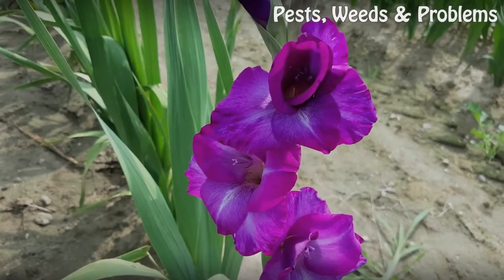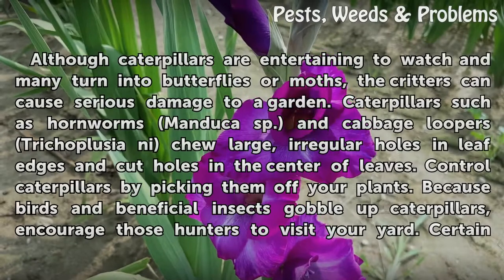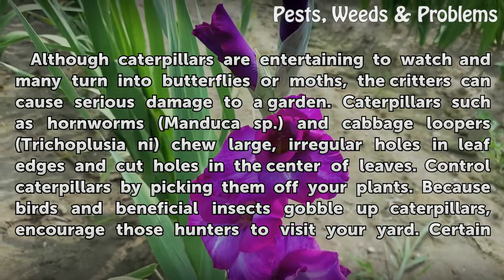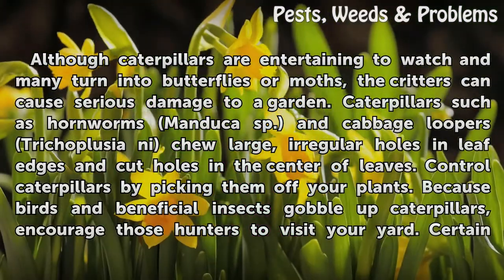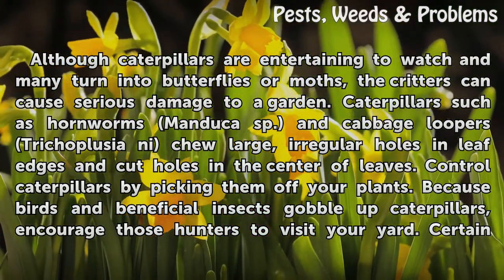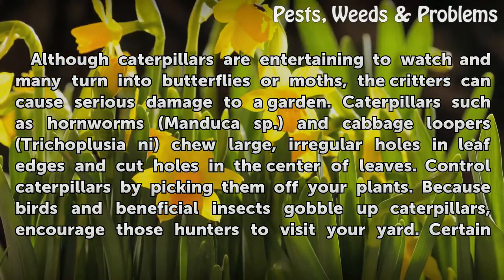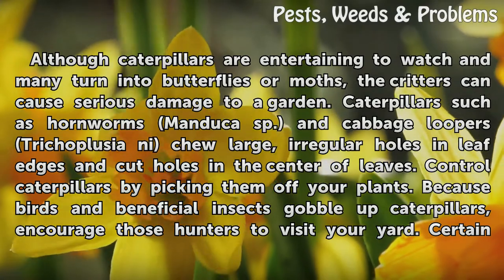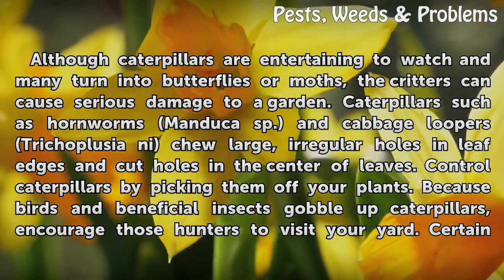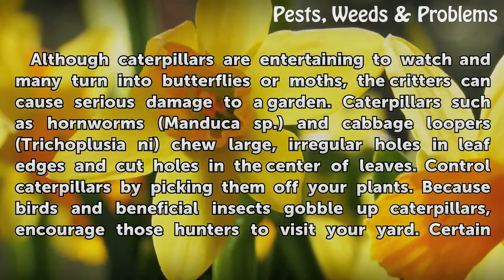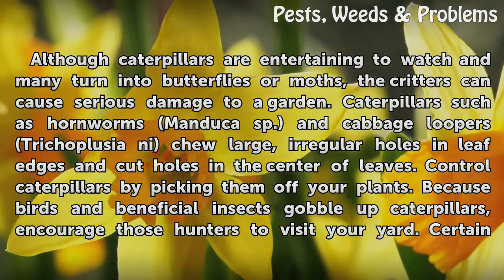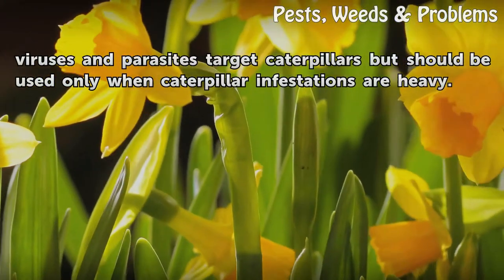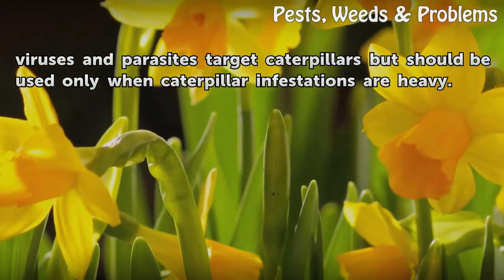Caterpillar: Although caterpillars are entertaining to watch and many turn into butterflies or moths, the critters can cause serious damage to a garden. Caterpillars such as hornworms (Manduca sp.) and cabbage loopers (Trichoplusia) eat large, irregular holes in leaf edges and cut holes in the center of leaves. Control caterpillars by picking them off your plants. Because birds and beneficial insects gobble up caterpillars, encourage those hunters to visit your yard. Certain viruses and parasites target caterpillars but should be used only when infestations are heavy.